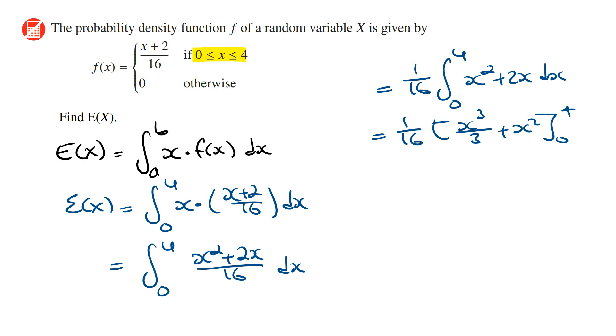And now subbing in the terminals, we're going to get 1 on 16 times 4 cubed over 3 plus 4 squared, which is 16, and then minus subbing in 0, which is going to get 0.